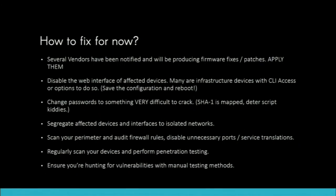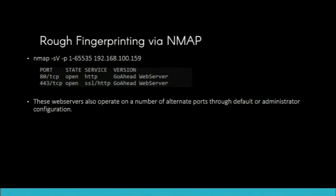Manual testing methods are super important — that's one of the things that gives us an advantage. For fingerprinting, do an NMAP scan with banner grabbing across all ports, because a lot of these devices live on alternate ports like 10000 or 8080. Segregate all your devices, scan your perimeter, and audit your firewall rules. And please — changing the port number as a security measure is the dumbest thing in the world. You only add about two minutes of NMAP time. Do not use that.